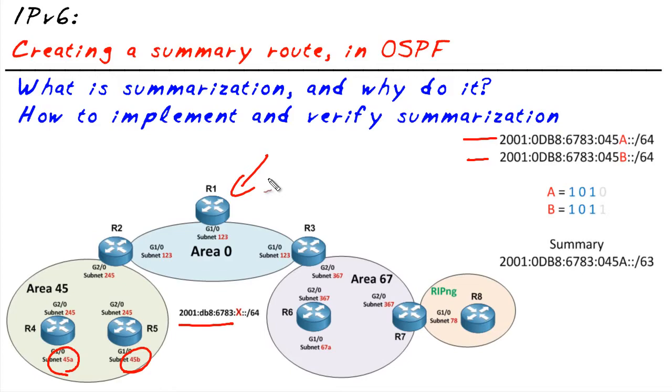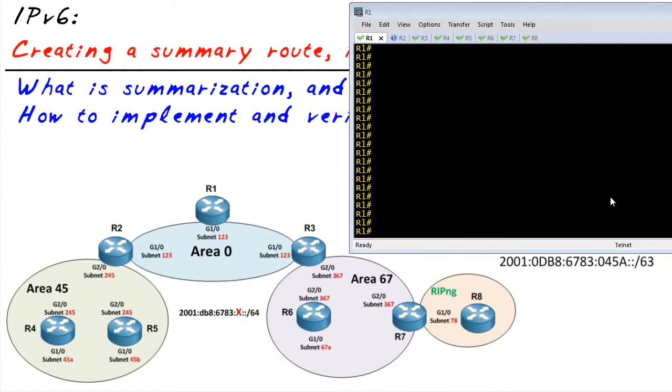Let's take a quick peek at that right now. On R1, let's take a quick look at the routes. In fact, I'm going to filter this a little bit. The 'show ipv6 route ospf' will show us all the routes, and the pipe and the include will say, 'Please only output the lines that include 45a and 45b.' That way, only the two routes that we're interested in will show up. If we look at the output...